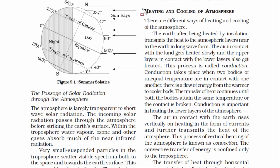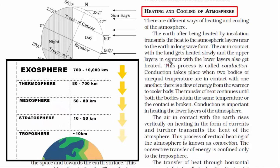Now let's go to the next topic: heating and cooling of the atmosphere. Just a quick refresher — the atmosphere has five layers. The exosphere is the first layer that gets the solar energy, and then the respective inner layers. This way, solar energy transmits heat from the exosphere to the troposphere — from outside to inside.